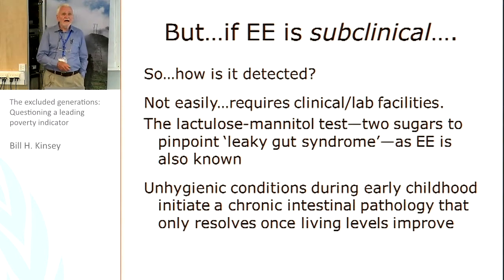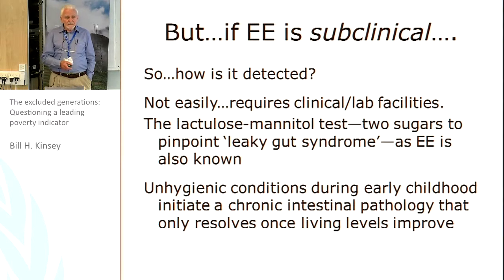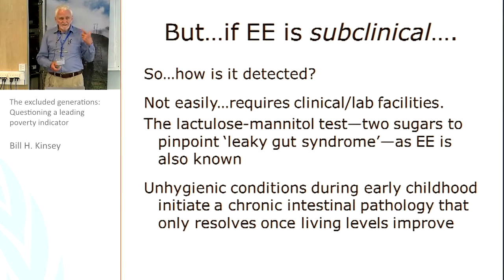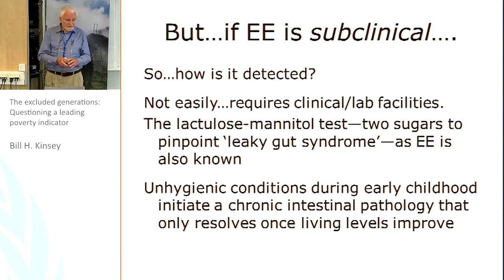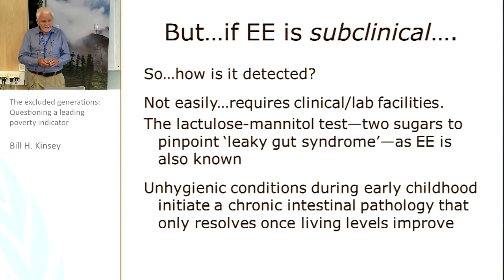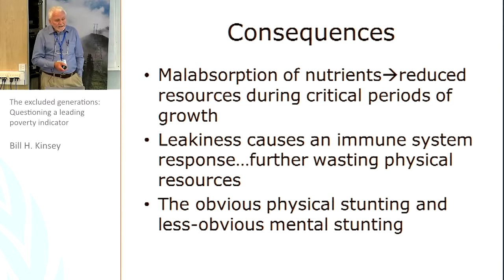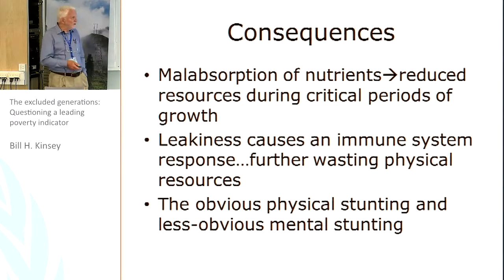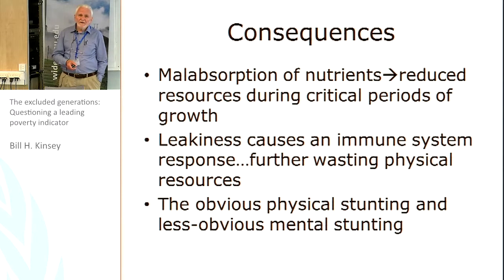If it's subclinical, how do you spot it? Medical researchers use what's called the LM test — the most common gold standard — which is to administer two different sugars to someone suffering from EE. One sugar leaks out into the bloodstream, and it's the ratio of these two sugars that determines whether you've got it or not. Essentially, EE creates a condition where malabsorption of nutrients reduces the resources available during critical periods of growth, causing the retardation of growth shown in that earlier diagram.